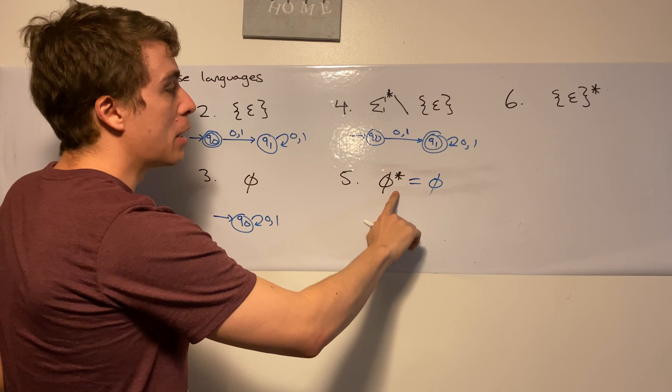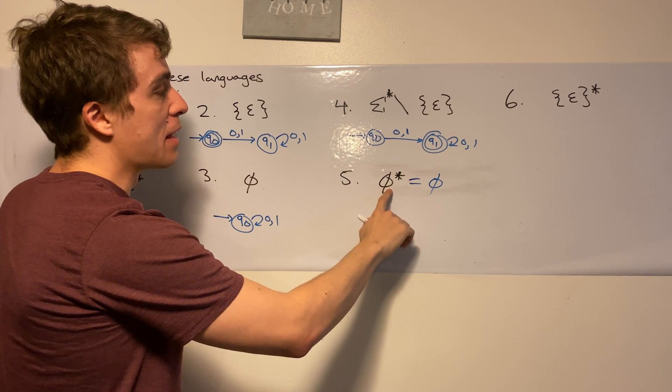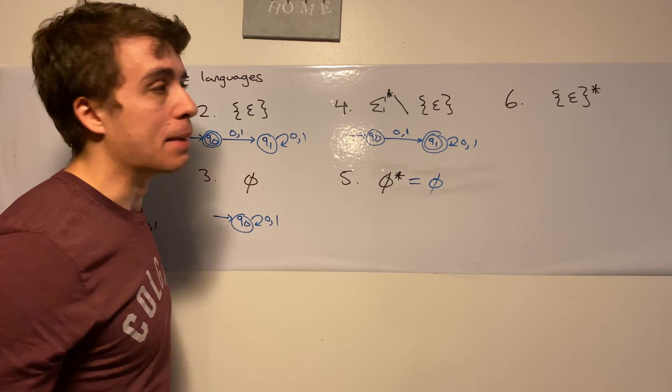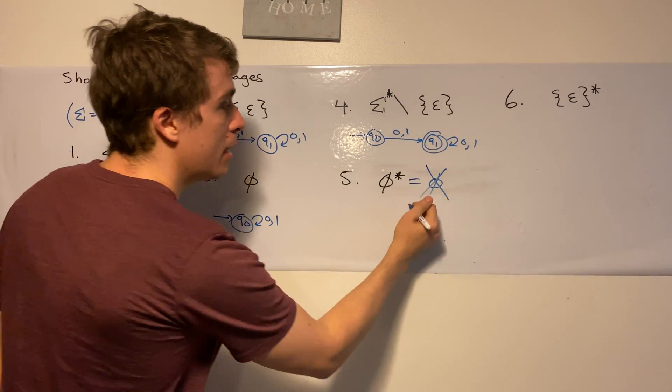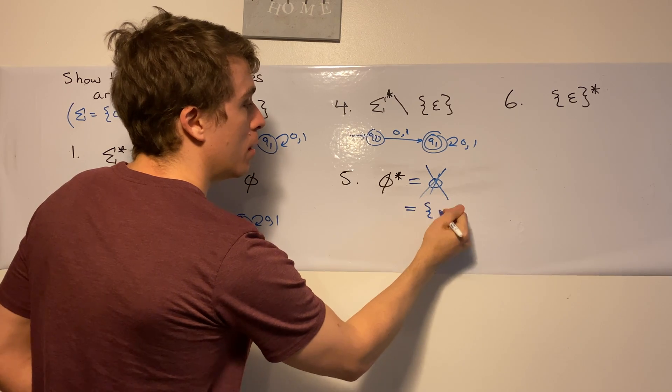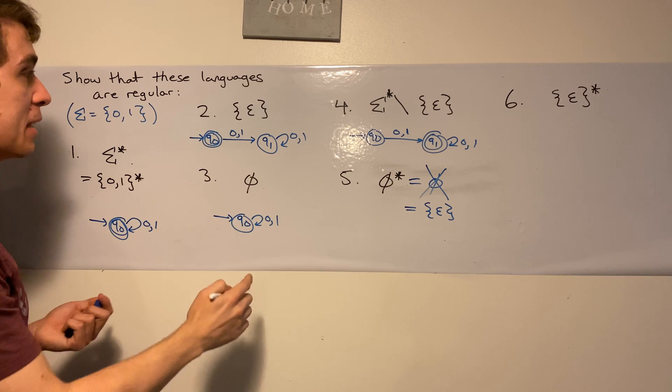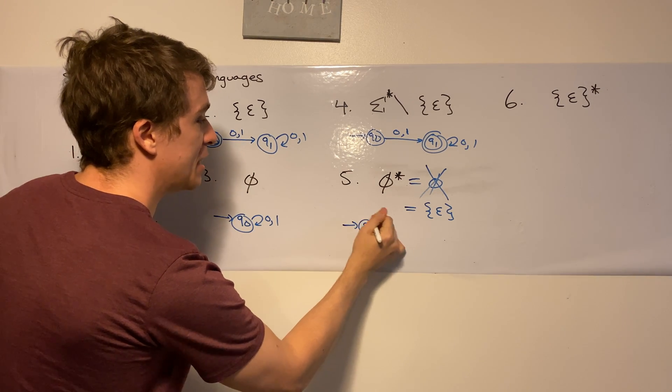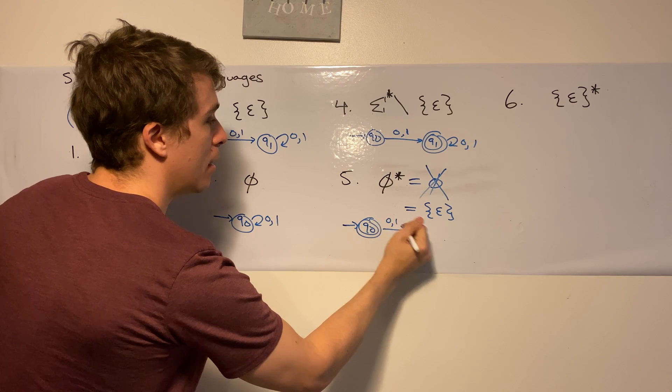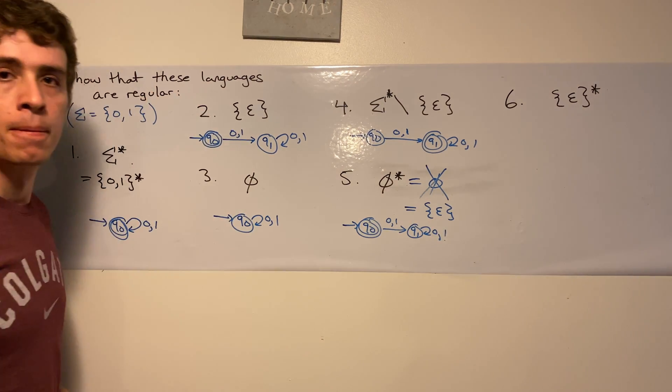Well, if we try to concatenate one or more of anything from the empty set, we're going to get the empty set. So it is not equal to the empty set, is equal to the empty string. And I think we made a DFA for that one already. So this one is exactly the same thing as that other DFA.